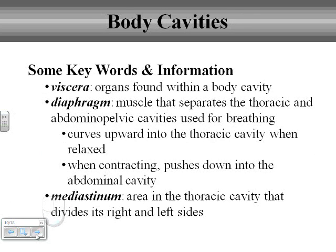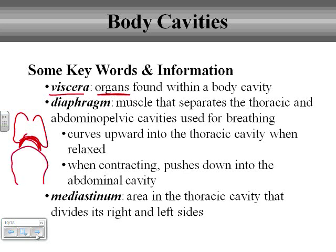There are a few key words when talking about body organization. We're going to talk about viscera, meaning organs. We're going to talk about the diaphragm — that muscle that sits right below the lungs, right below the thoracic cavity but above the abdominal pelvic cavities — and it's useful in controlling breathing. You'll learn more about exactly how the diaphragm works when you cover the respiratory system in A&P 2.